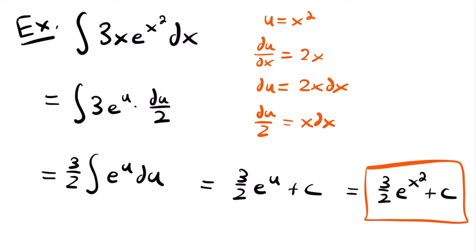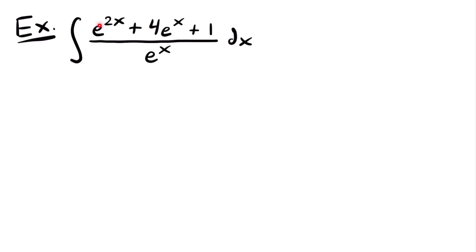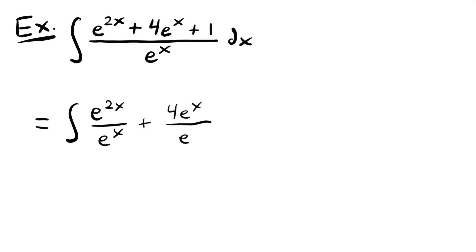That is the antiderivative. Next we have the integral of e to the power of 2x plus 4 times e to the power of x plus 1, all divided by e to the power of x, dx. Whenever you have multiple terms in a numerator and only one term in the denominator, a good technique is to split this into separate fractions. Here we have 3 terms in the numerator, so we split into 3 fractions, each divided by e to the power of x.